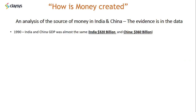In 1990, India and China had almost the same GDP, where India had a GDP of 320 billion dollars and China had a GDP of 360 billion dollars. GDP is the total spending that occurs in a country during a given year. So this is where we were in 1990.